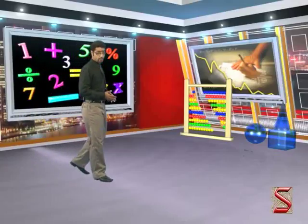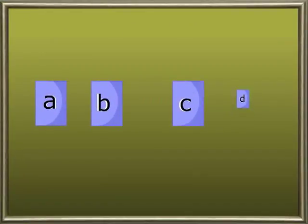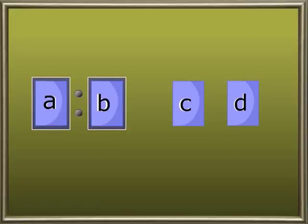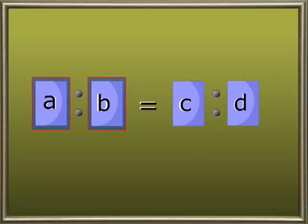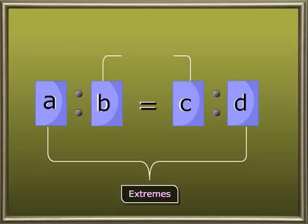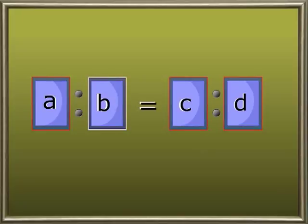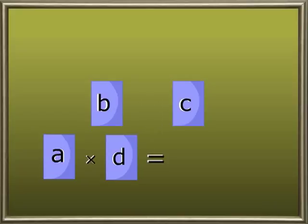Till now we have discussed about ratios. Now let's discuss about proportion. The equality of two ratios is called a proportion. Let A, B, C and D be four numbers. If A is to B is equal to C is to D, then A, B, C and D are in proportion. The terms at the extremes in a proportion are called the extremes and the two terms in the middle are called means. The product of extremes is equal to the product of means: A into D is equal to B into C.